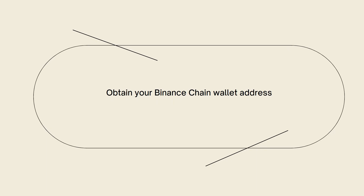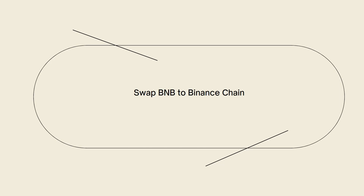Next, obtain your Binance Chain wallet address — create or log into your Binance Chain wallet and copy the BNB wallet address. Then you'll need to swap BNB to the Binance Chain network. To send BNB from Metamask to Crypto, you first need to swap your BNB from the Binance Smart Chain (BSC) network to the Binance Chain network using a Binance DEX or a similar decentralized exchange.